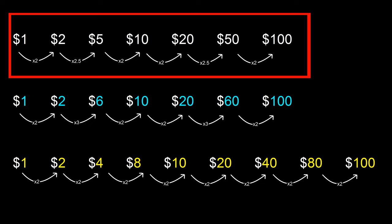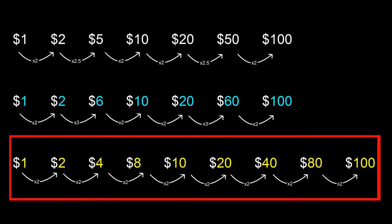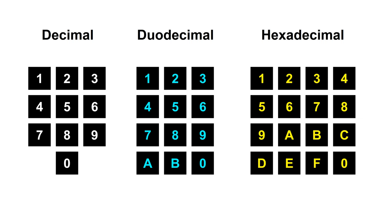In decimal it is difficult to manage money because you can't go up in round amounts — to keep it in sync with the base you have to go 1, 2, 2.5, 5, 10, 20, 50. In hexadecimal it is even better because you can just double it every time and still stay in sync with the base. In decimal there is no easy way to arrange all the digits into a keypad, so you end up having to go 3 by 3 and then put the 0 below. In duodecimal you can go 3 by 4 and in hexadecimal you can go 4 by 4.